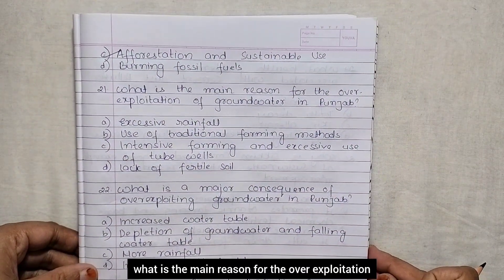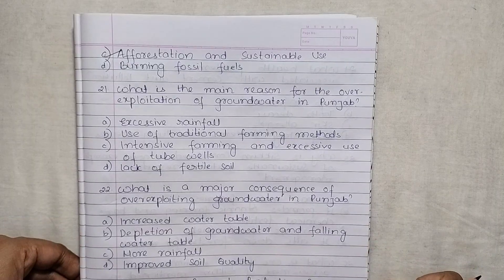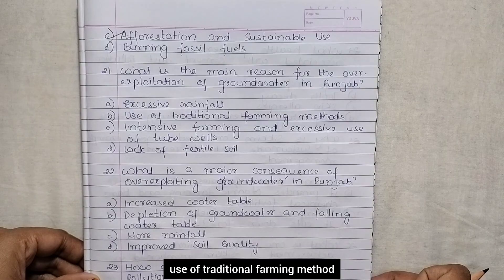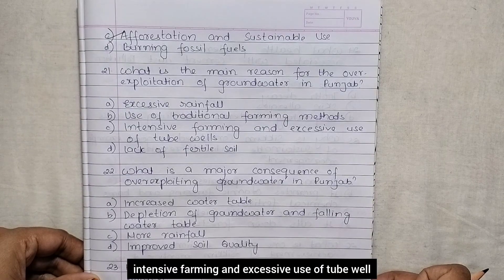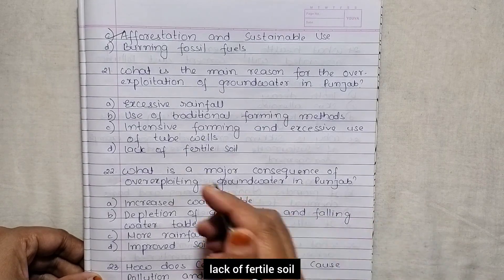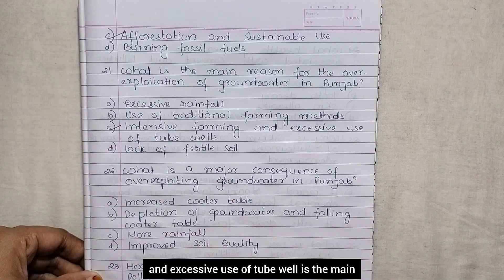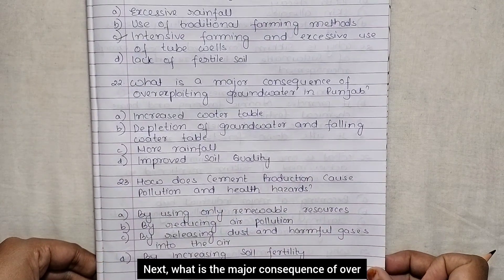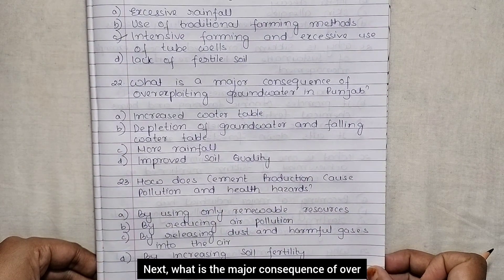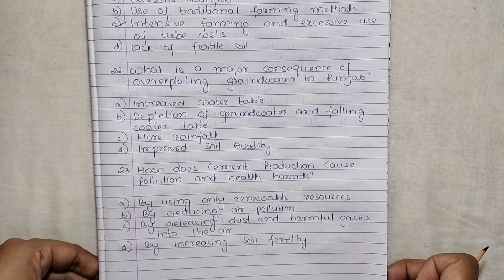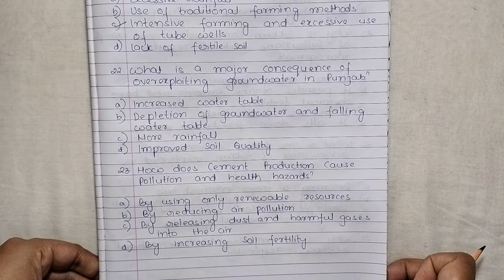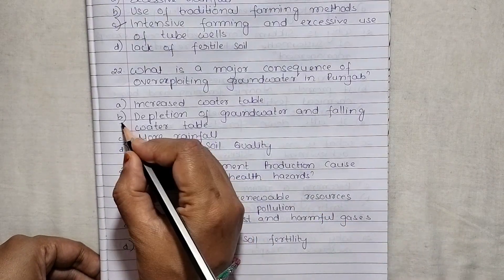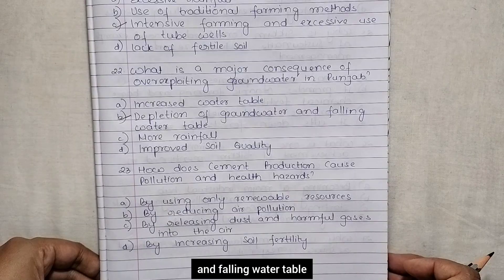What is the main reason for the overexploitation of groundwater in Punjab? Options are excessive rainfall, use of traditional farming methods, intensive farming and excessive use of tube wells, lack of fertile soil. Intensive farming and excessive use of tube wells is the main reason. The major consequence is depletion of groundwater and falling water table.